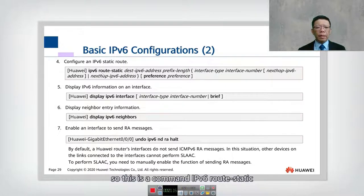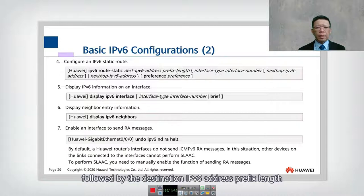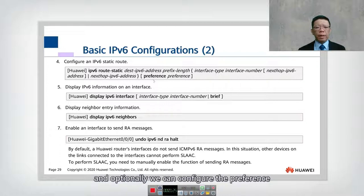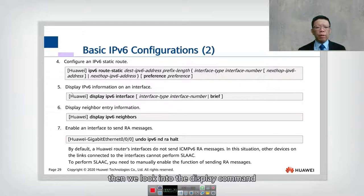To configure an IPv6 static route, the command is 'ipv6 route-static' followed by the destination IPv6 address and prefix length, then the next-hop address. Optionally, you can configure the preference value, similar to IPv4.